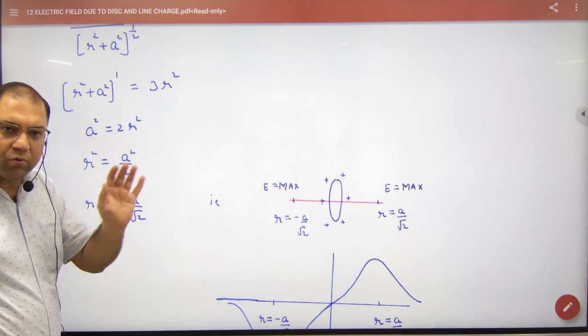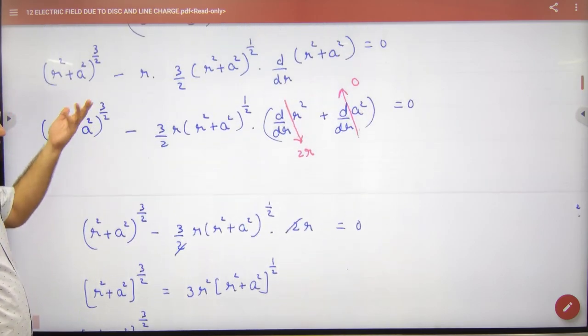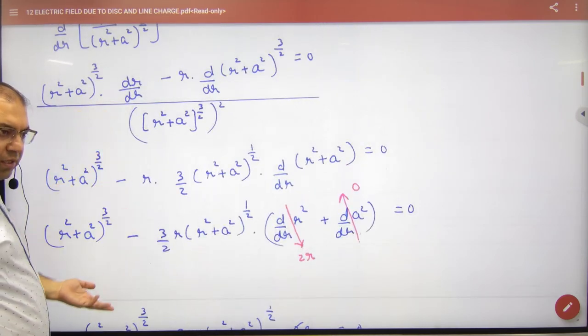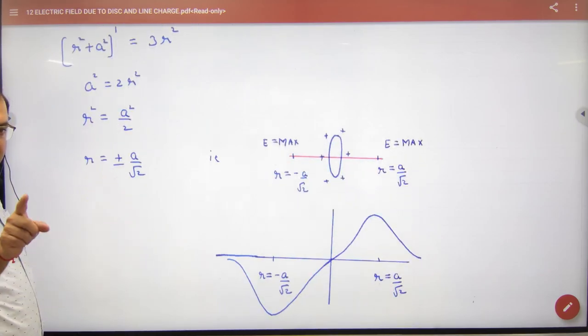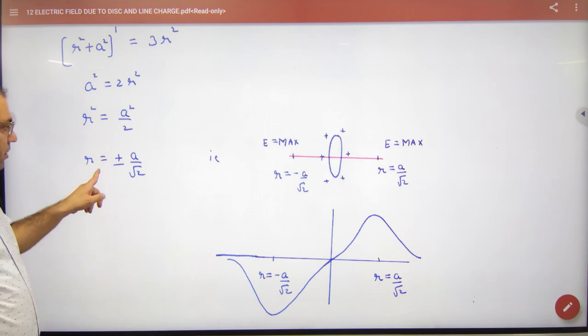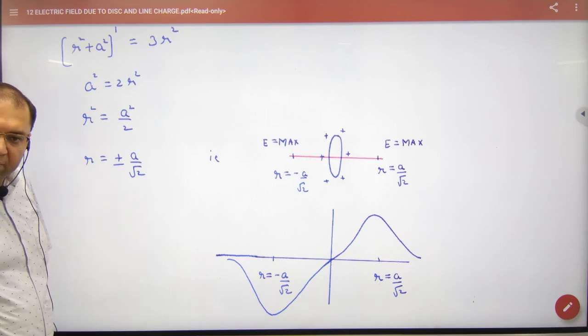You have no derivation of u by v, so I just wanted to check something, so I just wanted to show you. In these steps, you have to enter in the formula register, that in a ring of axis, r is equal to plus minus a by root 2, E's value will be maximum.